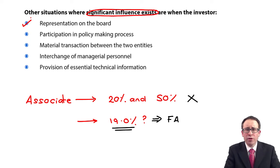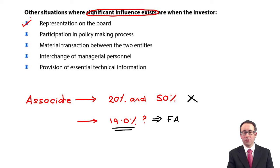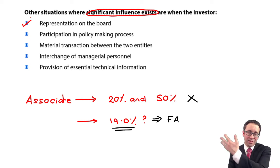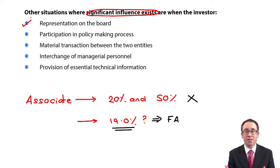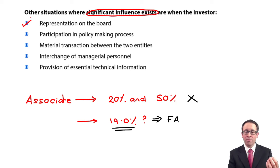Two out of five directors is 40% of the say; one out of four is 25%. That is going to give you influence. So because you've got representation on the board, and the volume of that representation allows you to exert significant influence, it helps you participate in the policymaking process and put forward your suggestions. If you had no board representation, the 19% would be a financial asset, but with board representation, we'd have an associate.